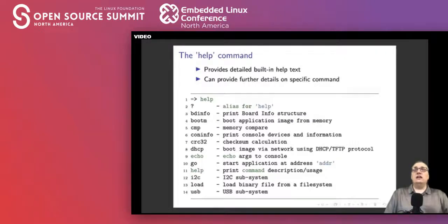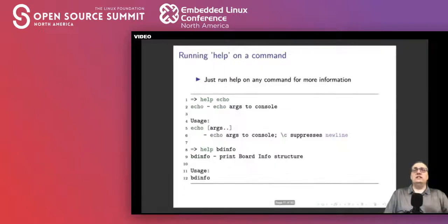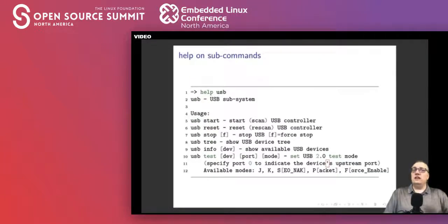Like any good command line, there's a help command. If you type help and press enter it will show you all the various commands and their descriptions. You can also get help on individual commands — for example, help on echo or help on bdinfo tells you what those commands mean. If a command has sub-commands, help will list those as well. Here's an example of the USB subsystem: you can start, reset, stop it, and see a tree of it to poke around and see how it works.